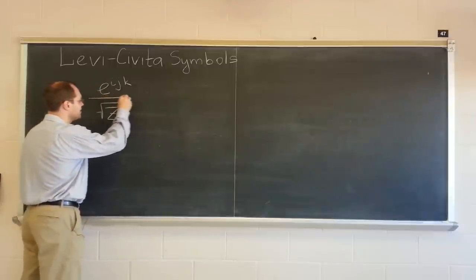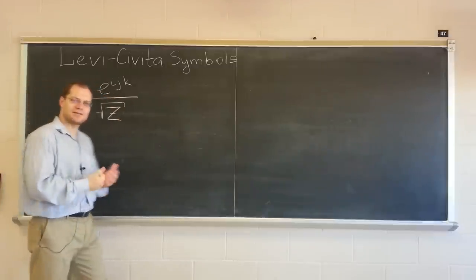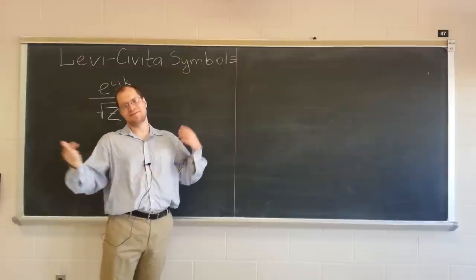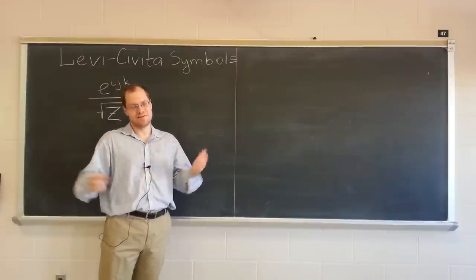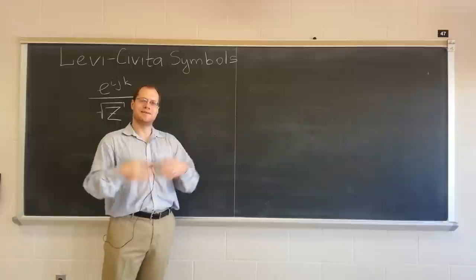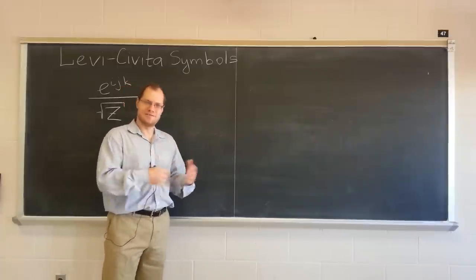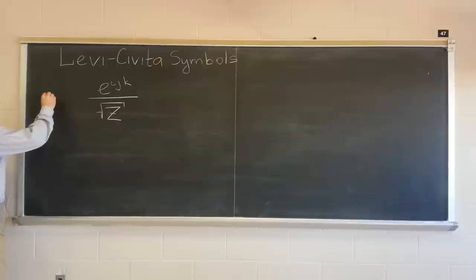So this is a relative tensor of weight negative one, and this is a relative tensor of weight negative one. So if we were to divide one by the other, we'll have a relative tensor of weight zero. In other words, it'll be an absolute tensor. It'll be a tensor.